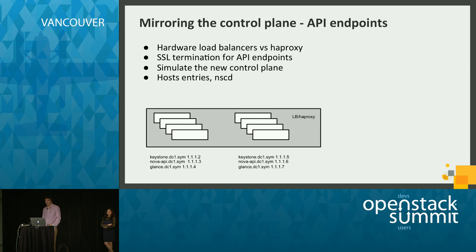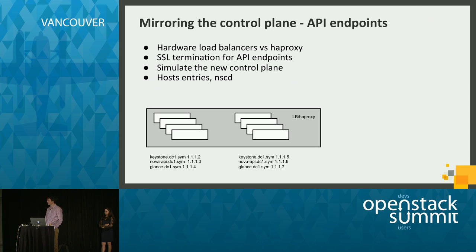When we mirrored the control plane using the load balancer, everything works with either hardware load balancers or HAProxy — it's the exact same thing. One of our requirements is to terminate all endpoints with SSL and TLS, so everything runs with HTTPS. We got rid of different ports for different components. If you have different IP addresses for your endpoints and want to use TLS, it's easier to use names and DNS for these components.